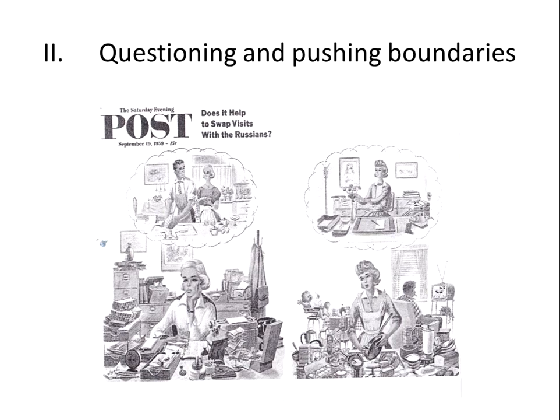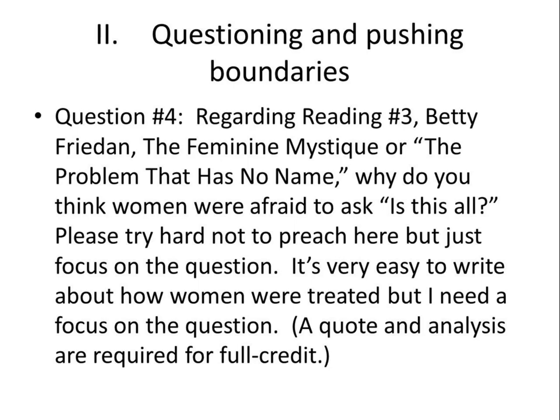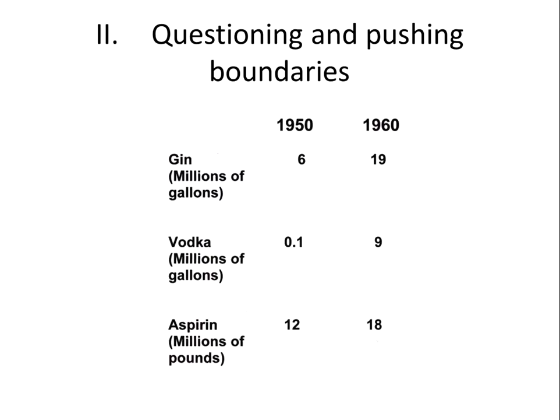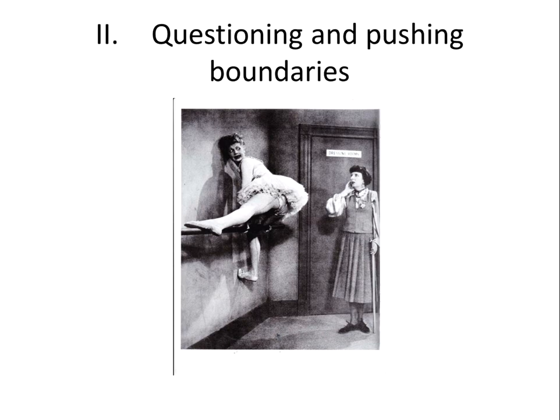Notice — 1959 — these women are not satisfied. Regarding Reading Three, Betty Friedan's 'The Feminine Mystique' — 'The Problem That Has No Name' — why do you think women were afraid to ask 'Is this all?' Focus on the question rather than general statements about how women were treated. A quote and analysis are required for full credit. One way people coped was drinking quite a bit — gin tripled, vodka went times 100. There were also 'mother's little helpers' — Valium and similar medications.